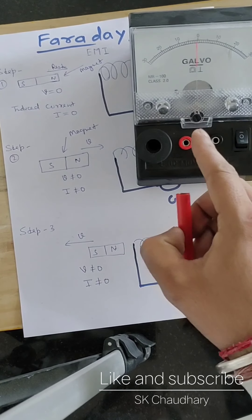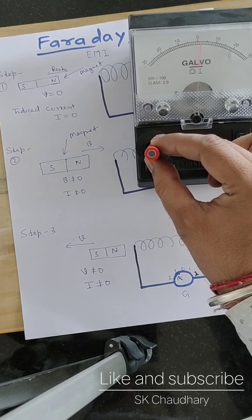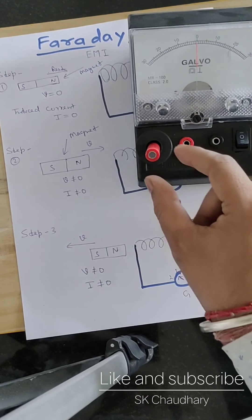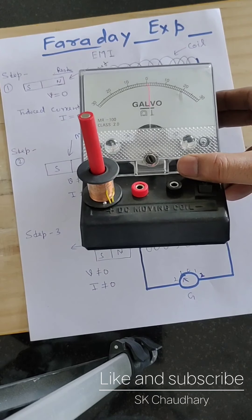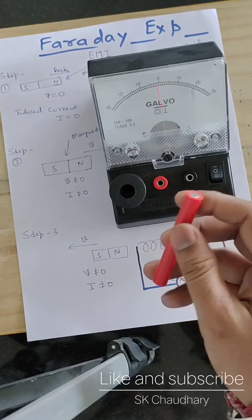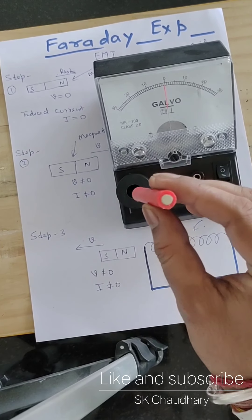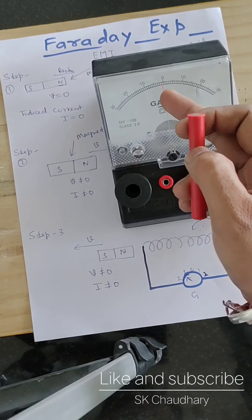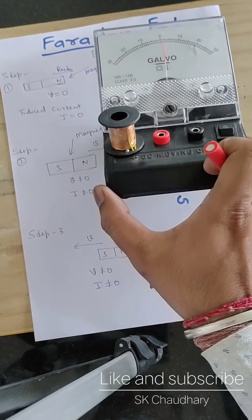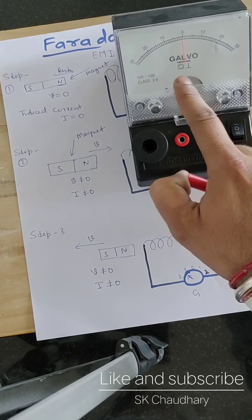Initially, you can see in the meter there is no deflection. When I start to move this magnet relative to the coil, the deflection takes place. If I put the magnet at rest inside the coil, there is no deflection. This means that relative motion must be present between them. If relative motion is there, deflection is there — and deflection means induced current is there. Whatever work we are doing on this magnet is being converted into electrical energy, which is the electric current.